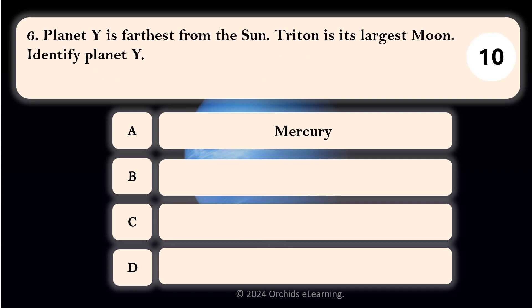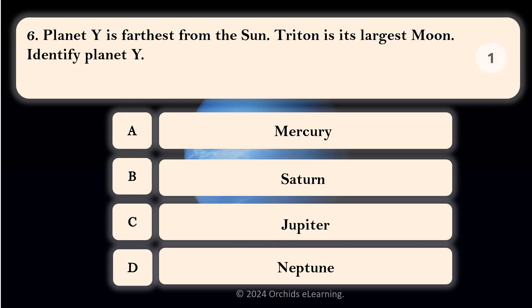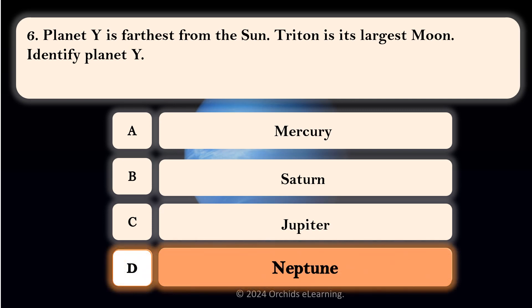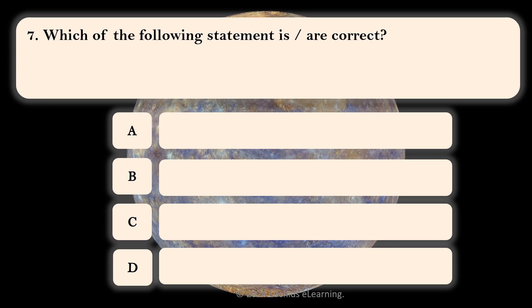Planet Y is farthest from the sun. Triton is its largest moon. Identify planet Y. D. Neptune.